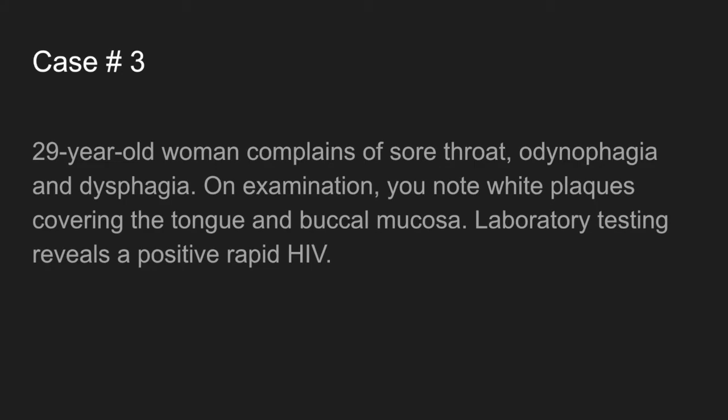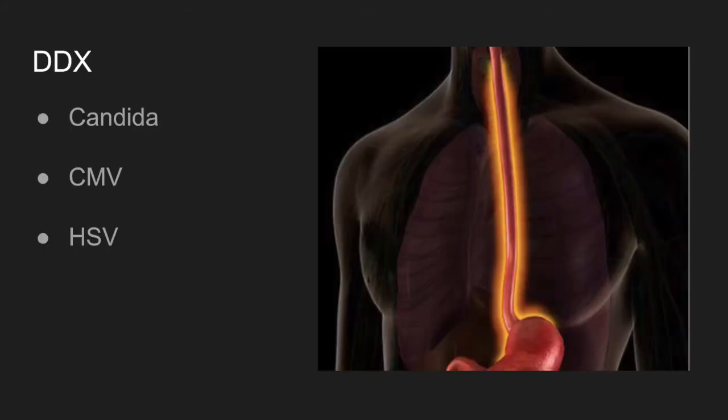Our last case: a 29-year-old woman with sore throat, odynophagia, and dysphagia. On exam, white plaques cover the tongue and oral mucosa, and rapid HIV testing is positive. Differentials include candida, CMV, and HSV esophagitis — all present with a CD4 count of less than 100. The absence of oral thrush does not exclude esophageal candidiasis, so it should remain on the differential. CMV most commonly produces ulcers at the lower esophageal sphincter that are linear and deep, whereas HSV ulcers are in the distal esophagus and more volcano-like in nature.